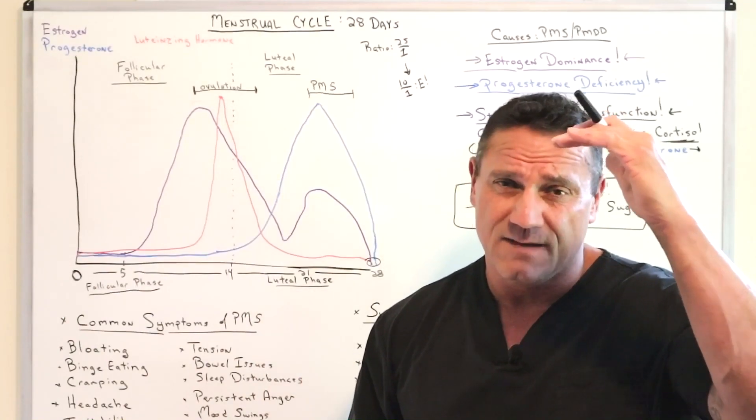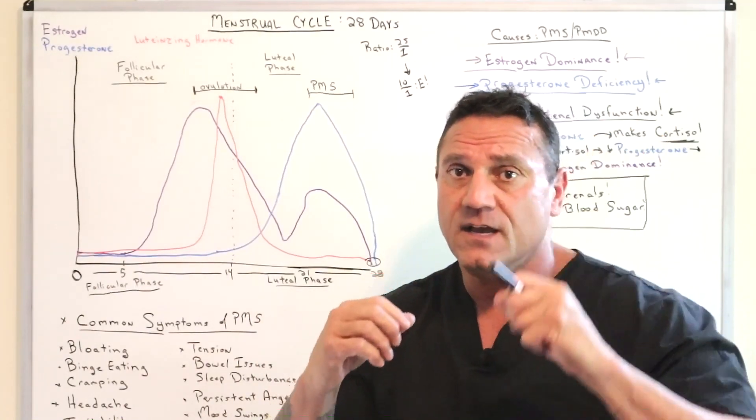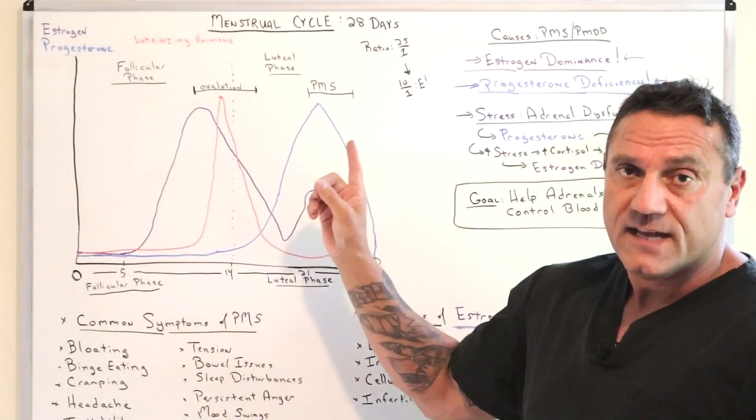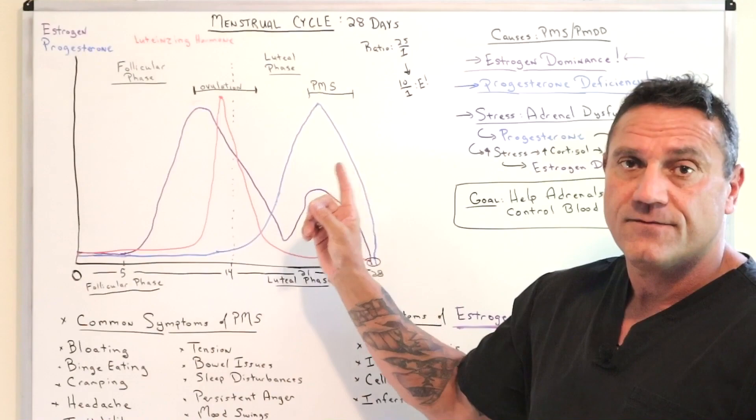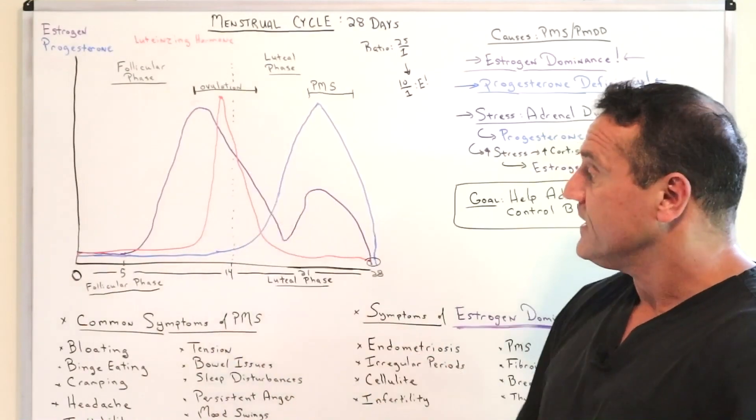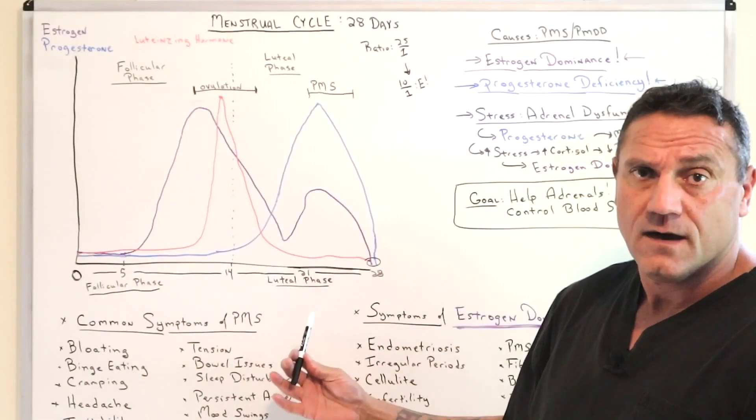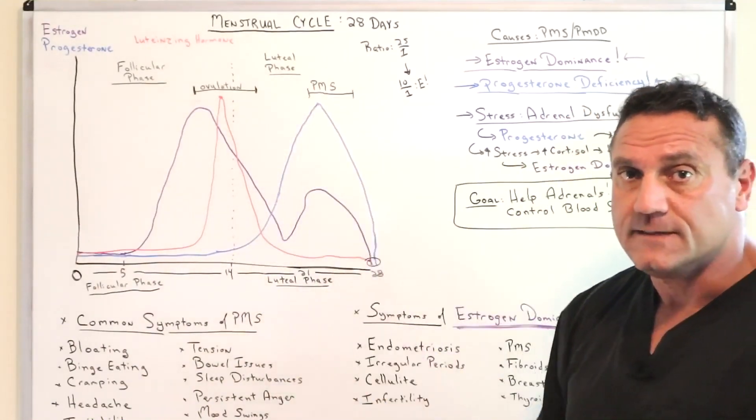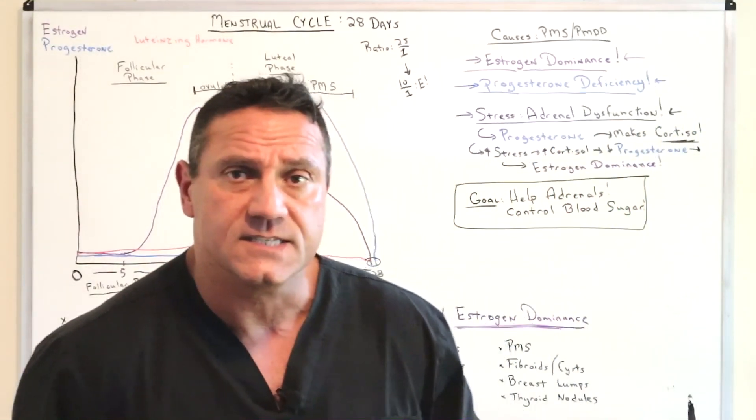So you're making 25 times the amount of progesterone to estrogen. It does fluctuate throughout the cycle, but the irregularity comes in the last three or four days of the dip of the menstrual cycle. Now again, the ratio 25 to 1. So what causes this dip?